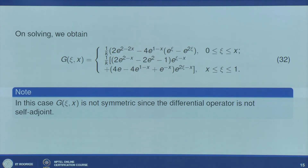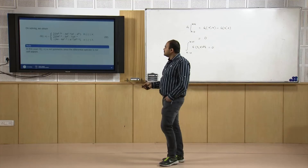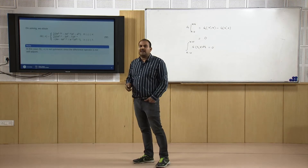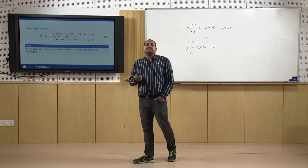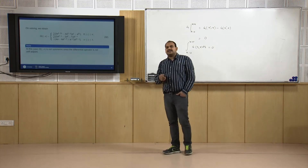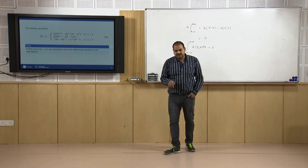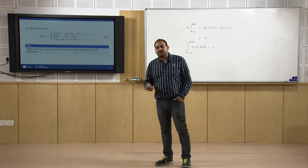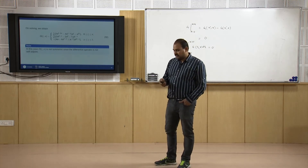We observe that g(ξ,x) is not symmetric, which is expected because the operator L is not self-adjoint. Symmetry of the Green function occurs only when L is a self-adjoint operator. In the case of a self-adjoint operator, the Green function is a symmetric Green function.